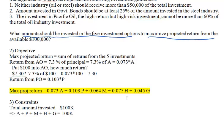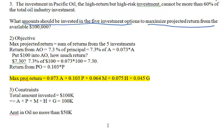Let's look at the first guideline: neither industry should receive more than $50,000 of the total investment. That means there's a limit on the oil industry and a limit on the steel industry, giving us two constraints. The amount going into the oil industry should be no more than $50,000, and the amount going into the steel industry should also be no more than $50,000.